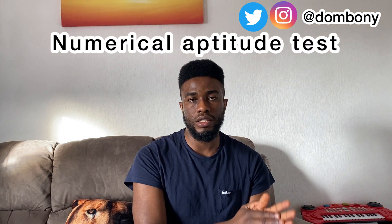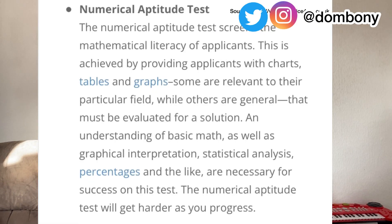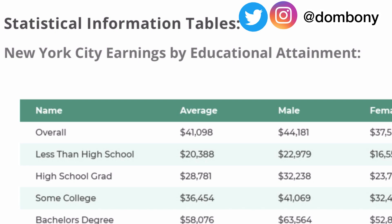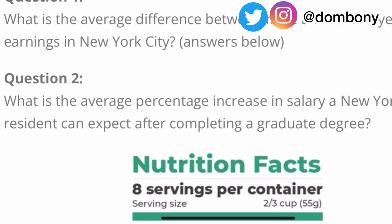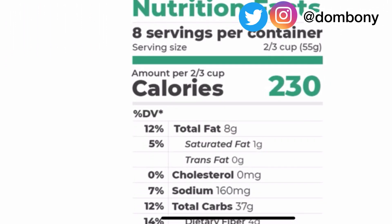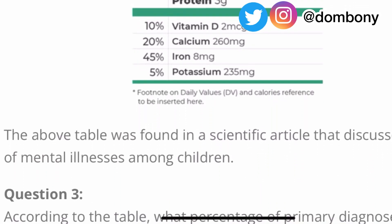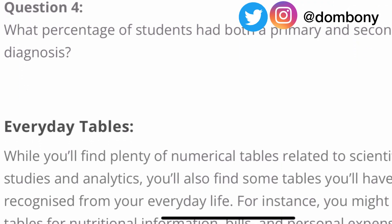Let's talk about the STP aptitude test. Candidates are screened in two different categories: the numerical aptitude test and the logical aptitude test. Both screen your mathematical and comprehension skills. The numerical aptitude test deals mainly with mathematical literacy — you'll be provided with charts, tables, and graphs to interpret and solve mathematical problems. It's multiple-choice: you have questions and multiple options, and you choose the correct answer. I'll be sharing the site where you can prepare for this aptitude test.